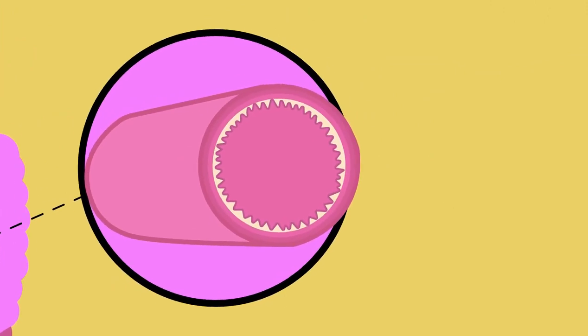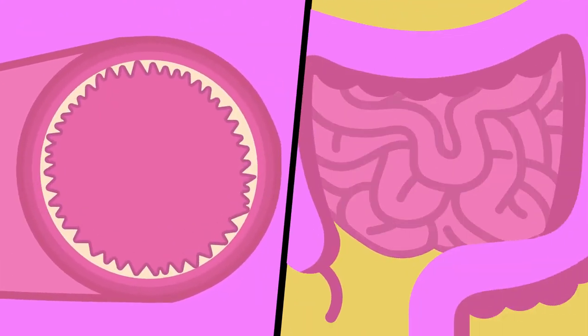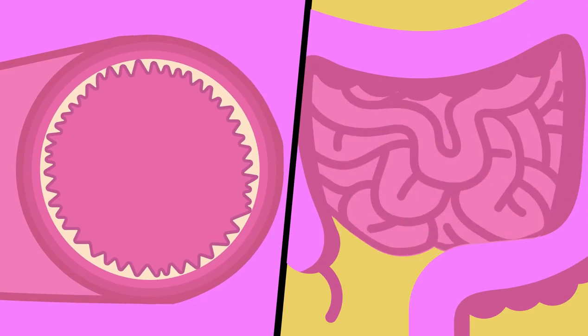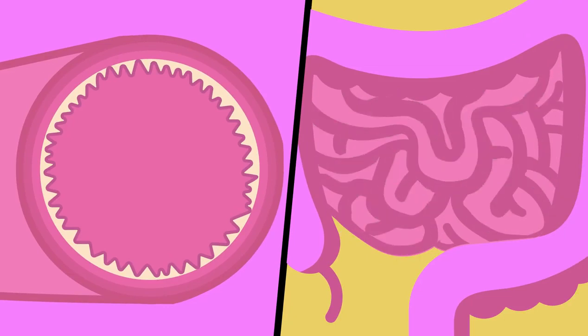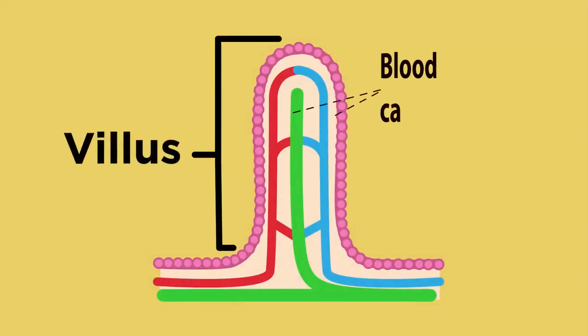The small intestine is made up of lots of tiny finger-like projections called villi. The villi increase the surface area of the small intestine. The larger the surface area, the more absorption that can take place.